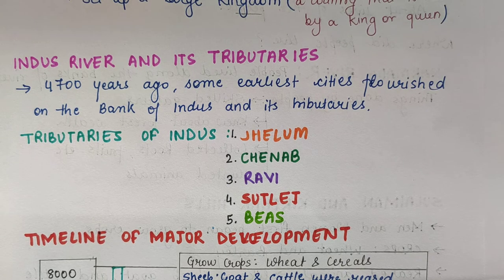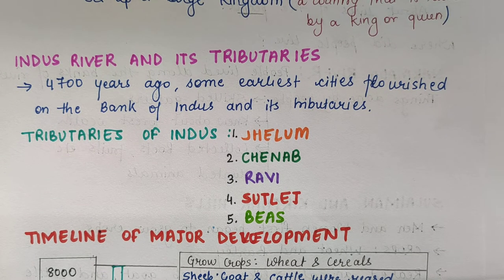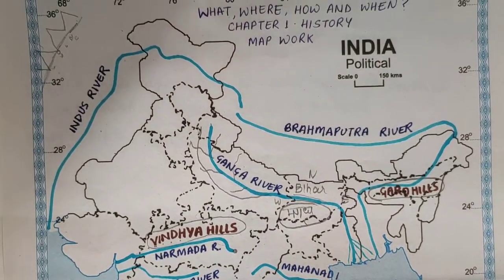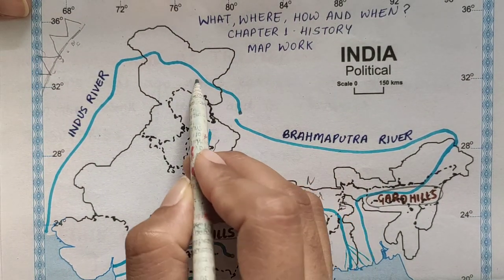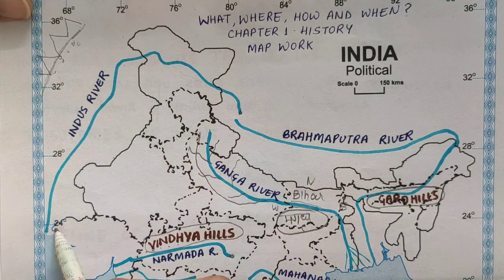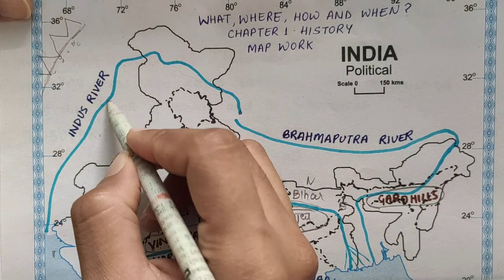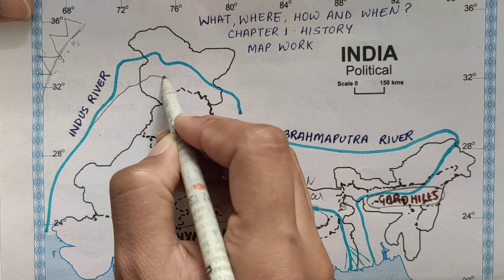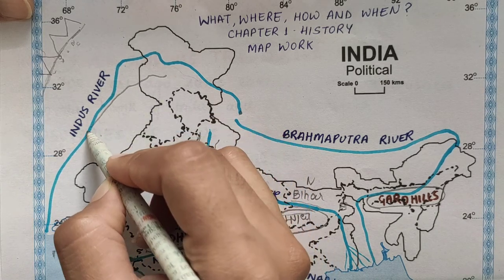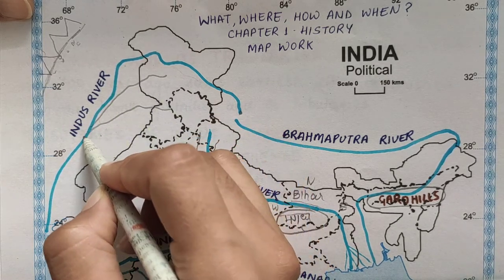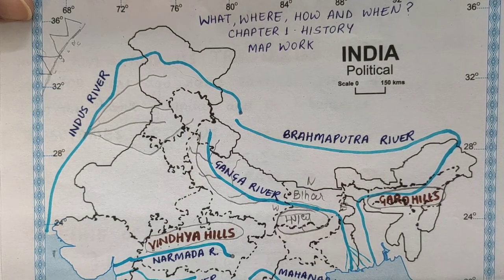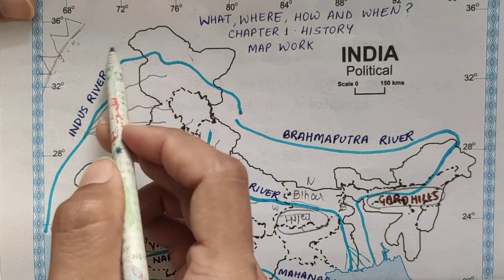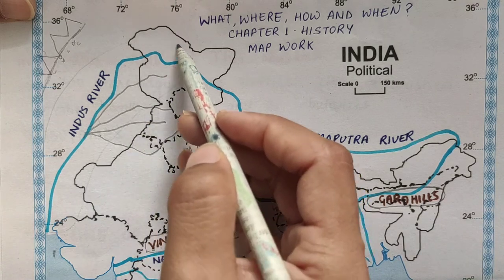Now, Indus River and its tributaries. We will focus on the Indus River. It is a river in Pakistan which starts in China or Tibet. And it flows from here, then goes into the Arabian Sea. So there are many tributaries of the Indus River — like these small rivers it has.